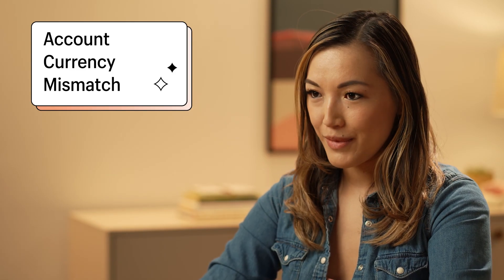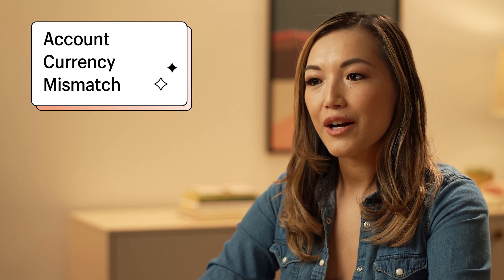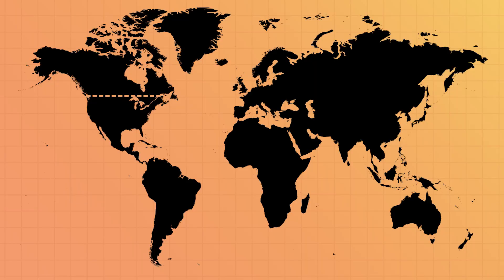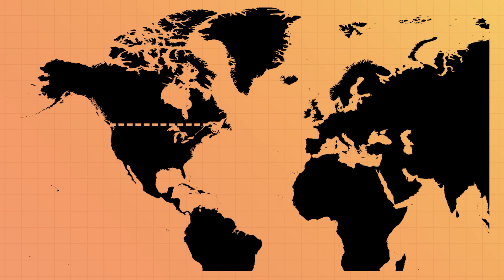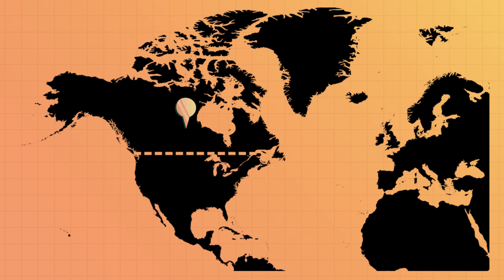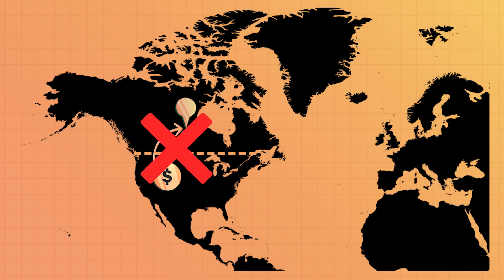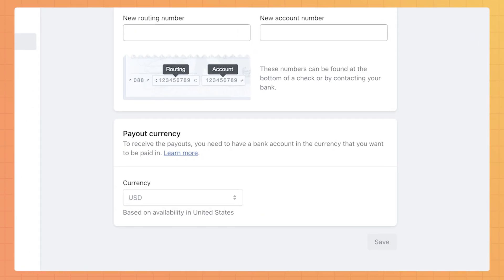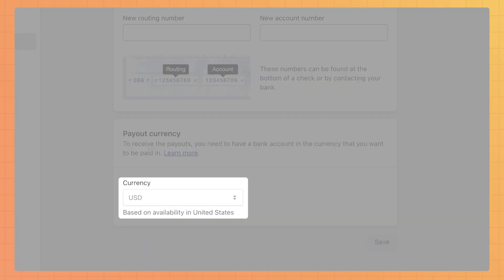Next, there might be an account currency mismatch. This means your bank account might not support the currency the payout is in. For example, if you're in Canada and have your payout set up to be in USD, but you don't have a USD account based in Canada, the payout will fail. To fix this, make sure your payouts are set to a currency that your bank account supports.